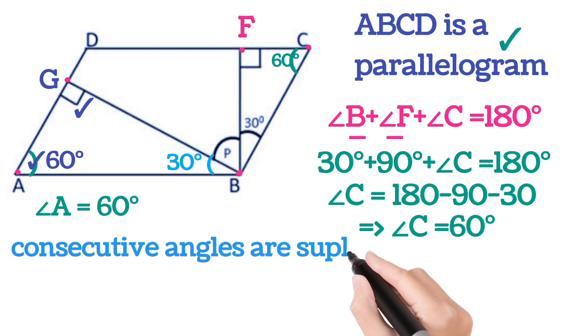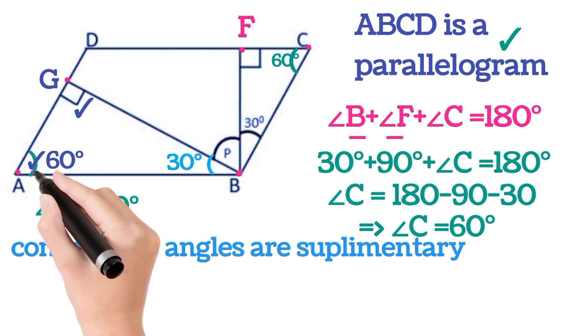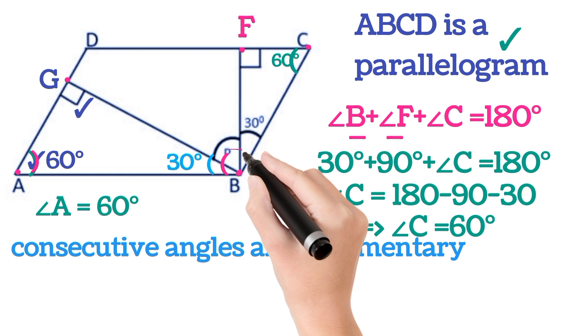Now we know consecutive angles are supplementary in a parallelogram. So this angle plus this whole angle will be equal to 180 degrees.